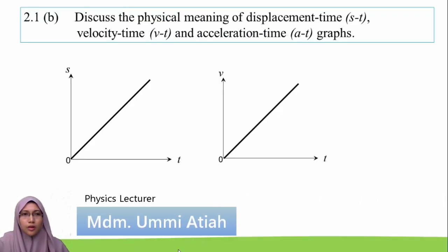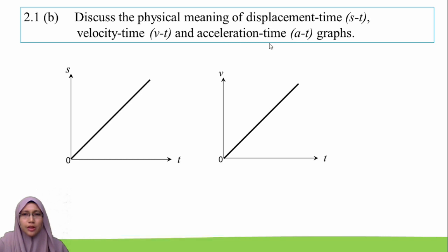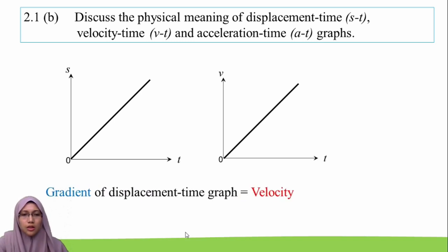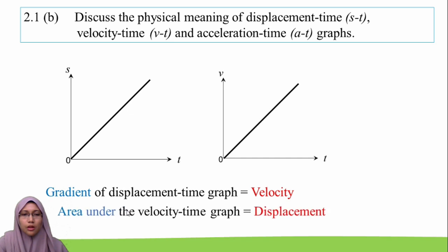The next learning outcome is to discuss the physical meaning of the displacement-against-time graph, velocity-against-time graph, and acceleration-against-time graph. The most important characteristics we will analyse are the gradient of the graph and the area under the graph. For example, the gradient of the displacement-against-time graph represents velocity.